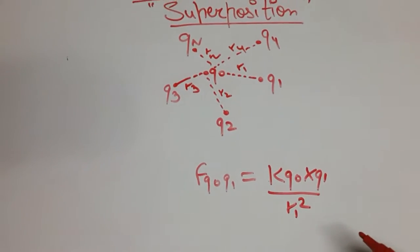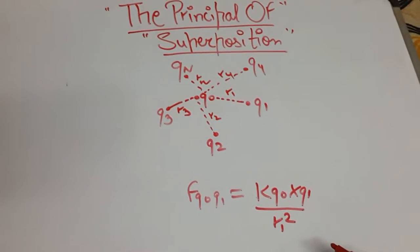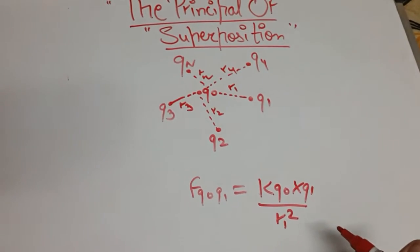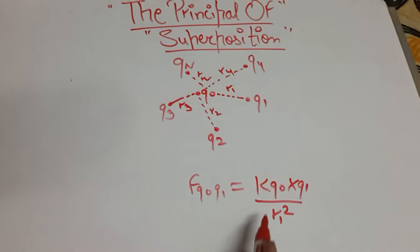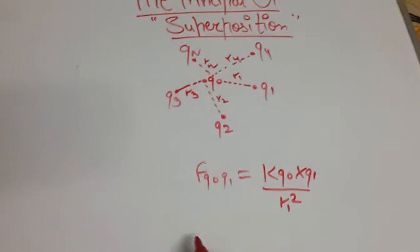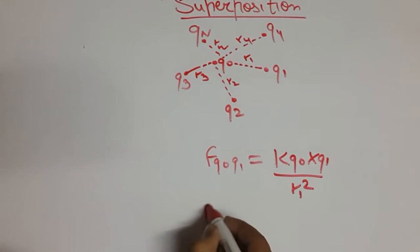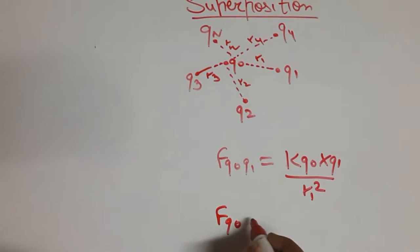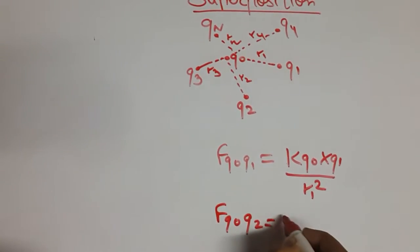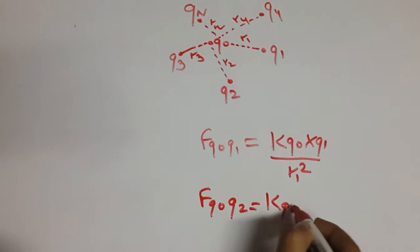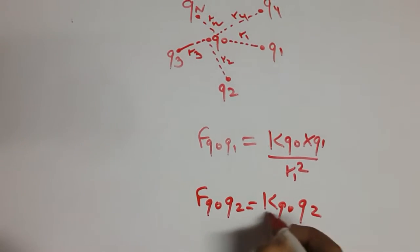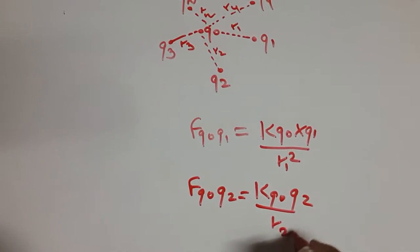If you don't know you can just check out my other videos in which I have defined what electrostatic force is. Here k is electrostatic force constant. So same goes with the force on q0 due to q2 which would be k q0 q2 upon r2 square.